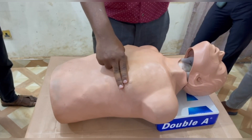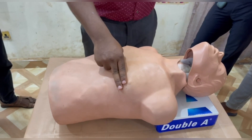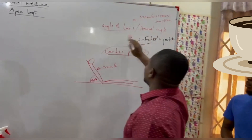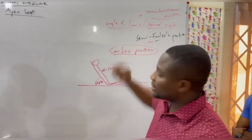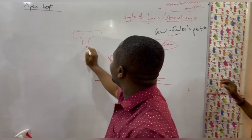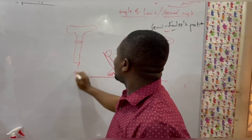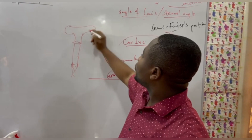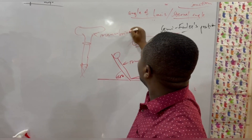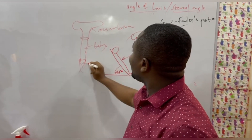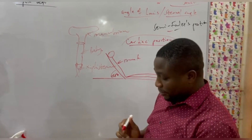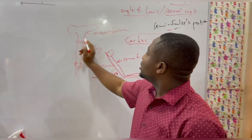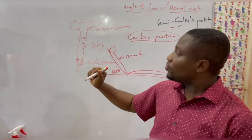The angle of Louis, seen here, is also known as the sternal angle or the manubriosternal junction. The sternum is made up of the manubrium, the body (corpus), and the xiphisternum. The sternal angle is simply the junction between the manubrium and the body of the sternum.